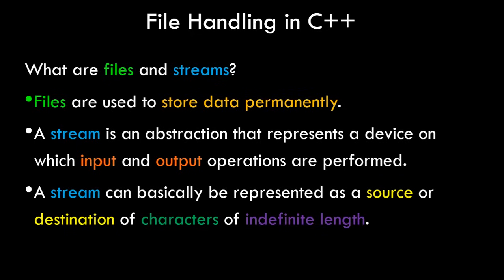So what are files and streams? Files are basically used to store data permanently. A file can be any file — for example, Excel files, text files, binary files, and so on. Depending on their extension we have multiple types of files. A stream is an abstraction that represents a device on which input and output operations are performed. In general, a stream can be represented as a source or destination of characters of indefinite length. We've already been using streams and including a header file named iostream.